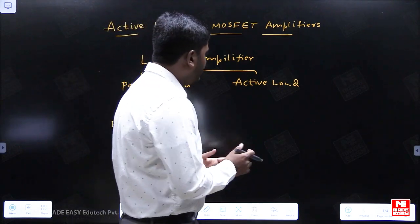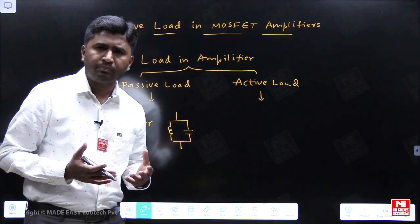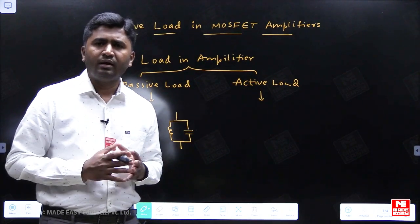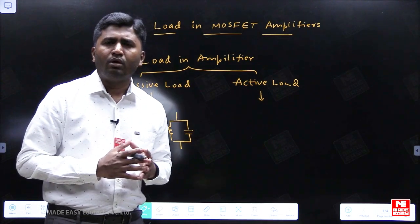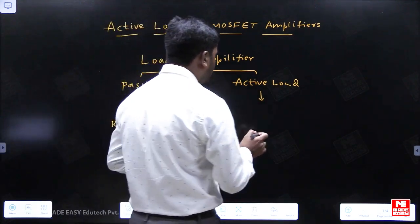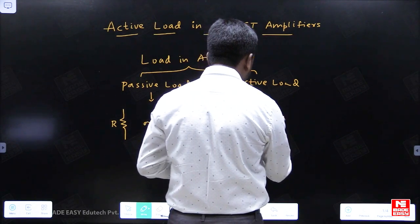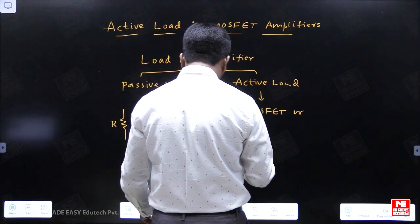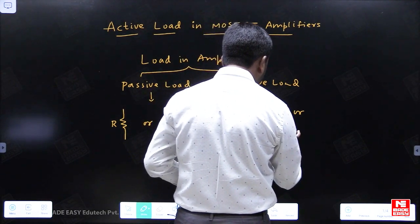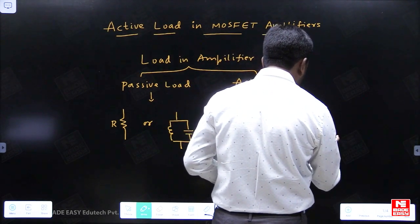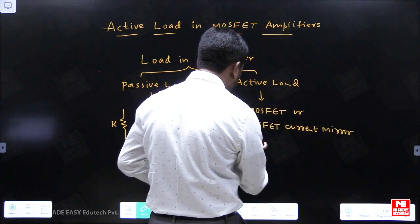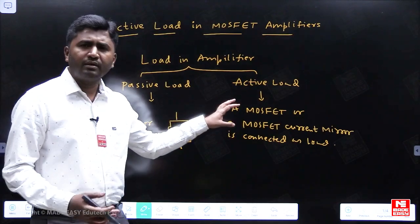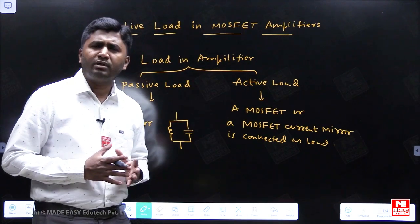In the case of active load, we will be using a MOSFET as a load, or a MOSFET current mirror as a load. MOSFETs come under active devices, so connecting a MOSFET or MOSFET current mirror as a load is called active load.